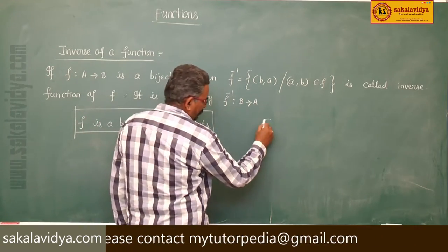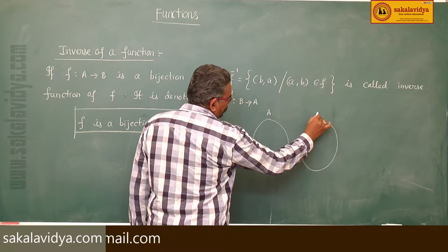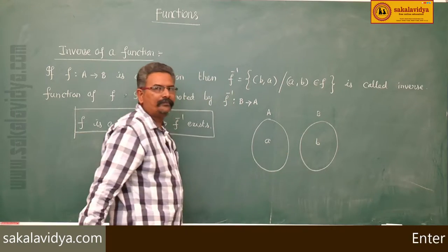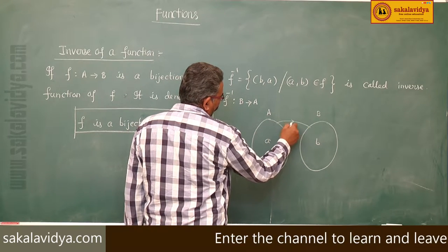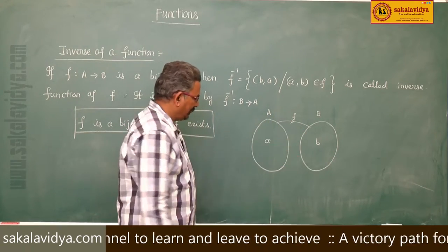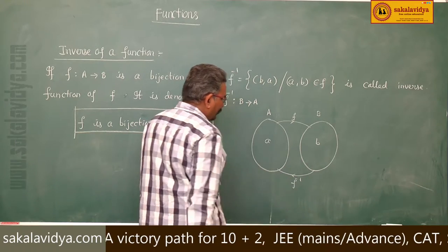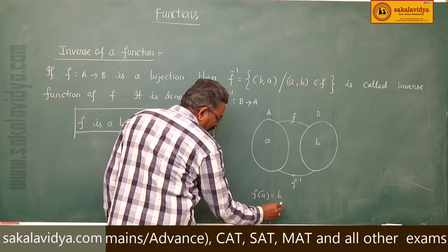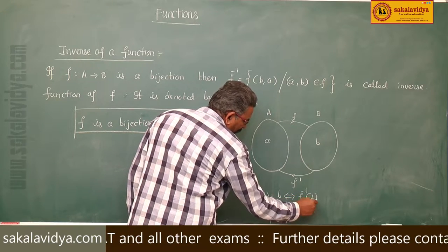Suppose this is set A and this is set B, with element a and element b. Then f is a bijection function from A to B, and B to A is f inverse. We know that f(a) = b if and only if f inverse(b) = a.